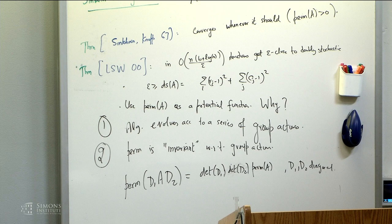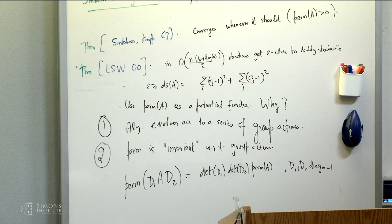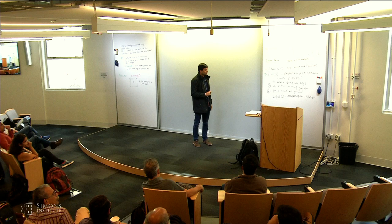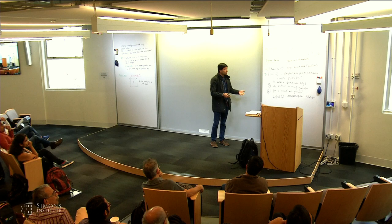Any questions so far? [Question about Hamiltonian cycles] Yeah, if you use a variation of the Hamiltonian cycle instead of the permanent, it will be the same — because all monomials/permutations in the permanent satisfy the same property. You can use the permanent; it doesn't matter. The key point is that the permanent will be greater than zero whenever the matrix is scalable, whereas the determinant could be zero — for example, the determinant of the all-ones matrix is zero. You want the convergence to be characterized by the non-zero-ness of your potential function.